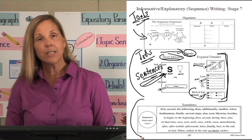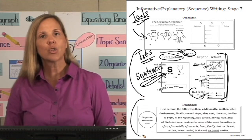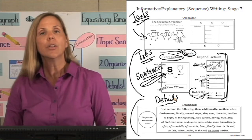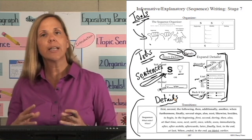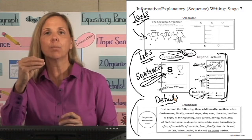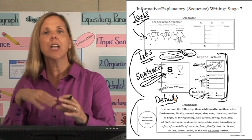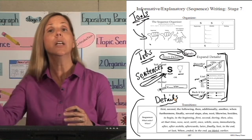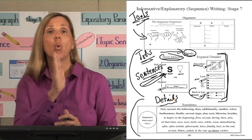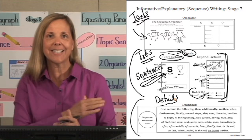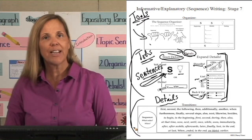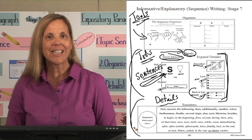Right below the detail tools are transitions—the transitions needed for detailed sentences. When planning detailed sentences, once you have a complete sentence and have expanded on it, you may want to go back and decide whether to add a transition to smoothly move from one detail sentence to the next. Here are all our tools for Stage 7 Informative Explanatory Sequence Writing. The next two pages cover the hook and the snappy ending.